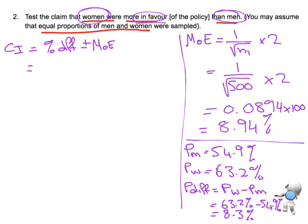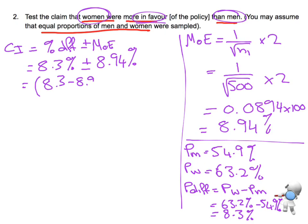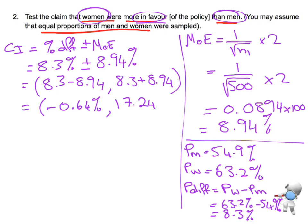So that's the difference — there's 8.3% more women in favour than men from the sample. My confidence interval is that percentage difference of 8.3%, plus or minus the margin of error of 8.94%. Doing the plus and minus: 8.3 minus 8.94 gives negative 0.64%, and 8.3 plus 8.94 gives 17.24%.